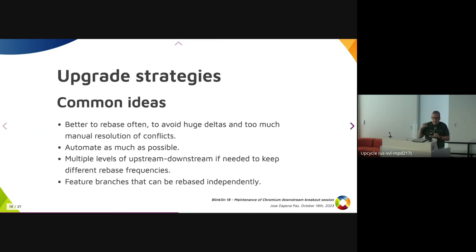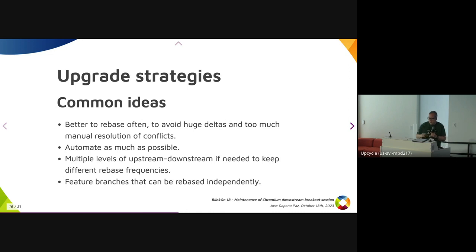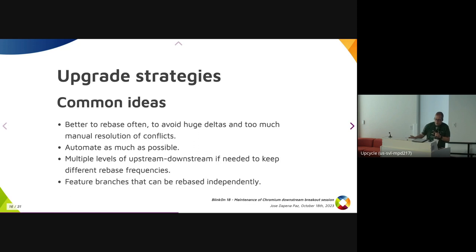Another obvious strategy: if you automate, you can rebase more often. Then you can detect regressions automatically. It's not only about rebasing automatically — it's more about passing QA automatically, so you can detect that your browser's functionality is still working. Another strategy is using multiple levels of upstream and downstream: one layer very close to upstream but without all the functionality, and a more downstream-specific layer for complex, platform-specific features.